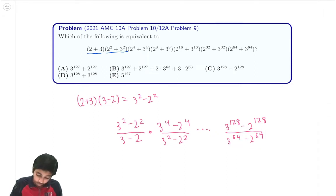And then from here we can see that this will cancel. 3 squared minus 2 squared cancels with 3 squared minus 2 squared. All of these terms cancel. We're left with 3 to the 128 minus 2 to the 128 over 3 minus 2.